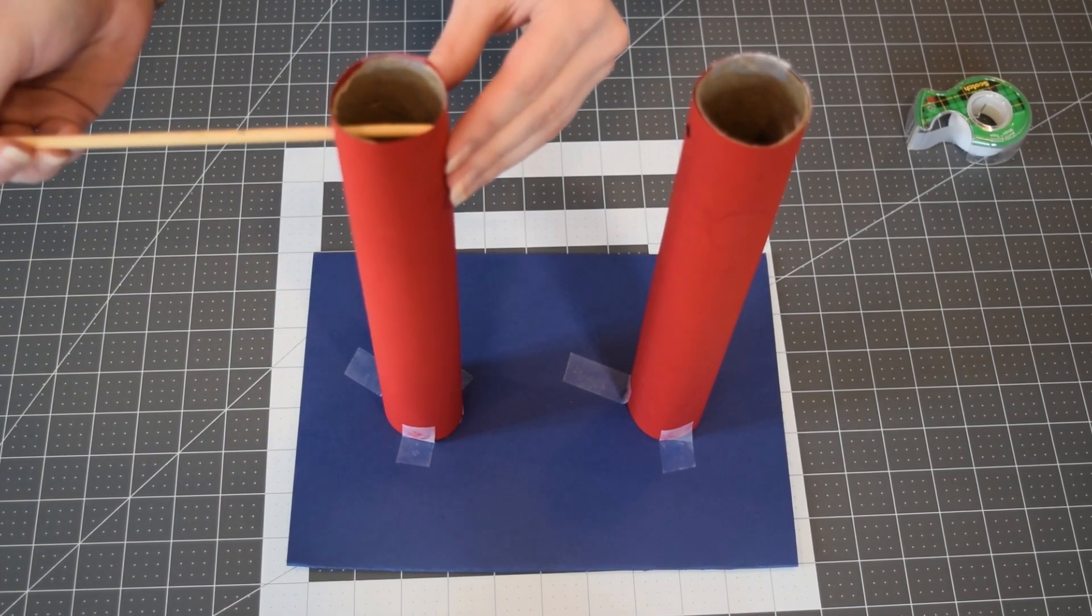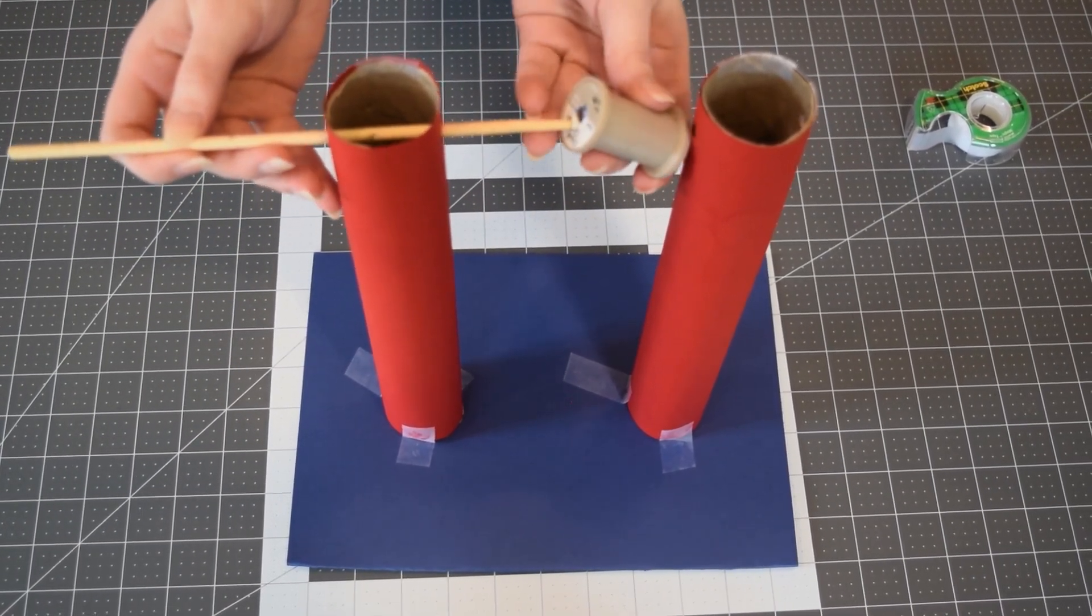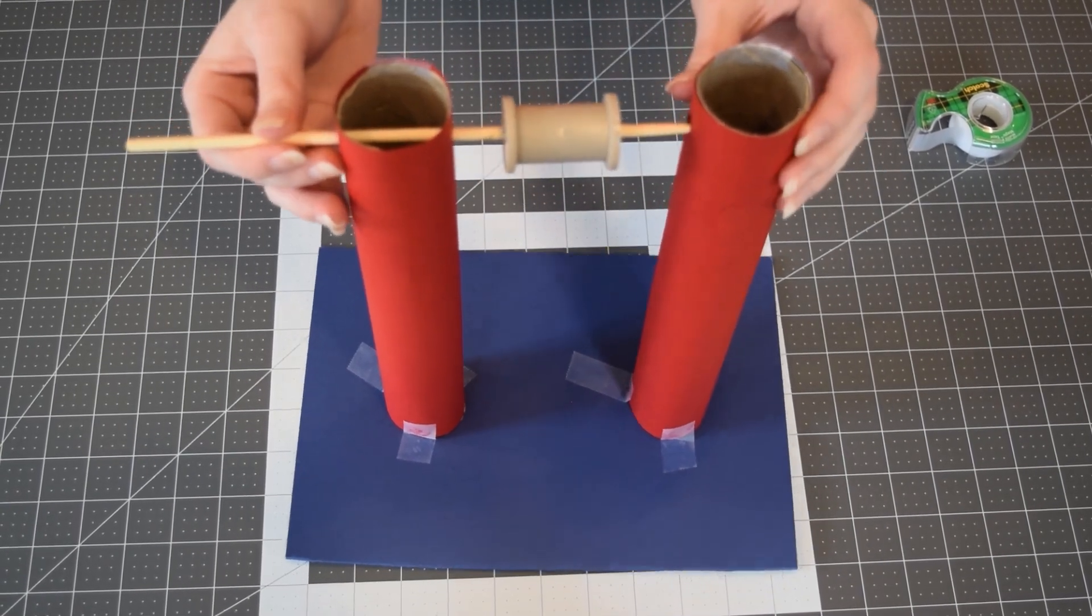Next, I'm running my chopstick through one of the tubes, and adding the spool in the middle, and then running it through the other tube.